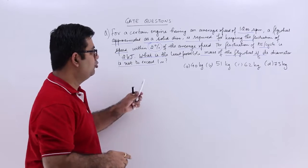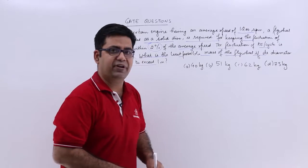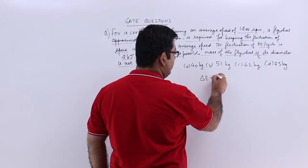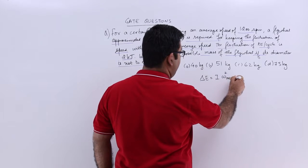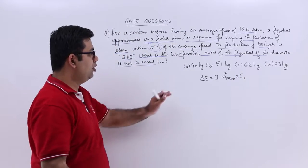So you have 4 options. The fluctuation of kinetic energy per cycle is given as delta E is equal to I omega square mean into Cs. That is the coefficient of fluctuation.